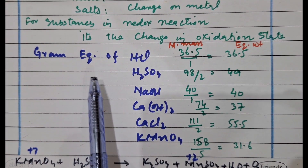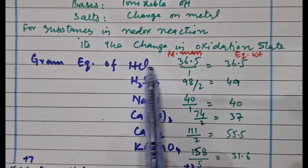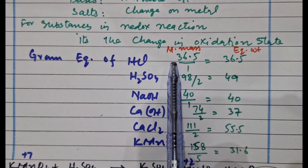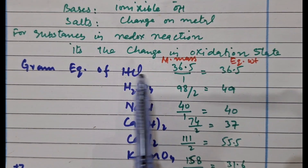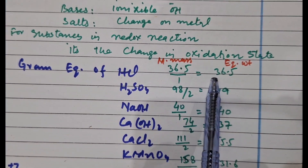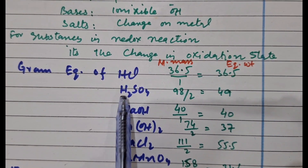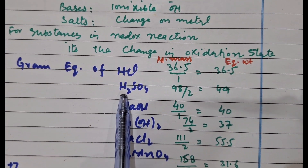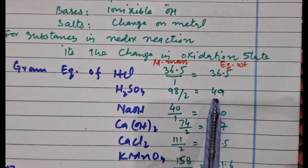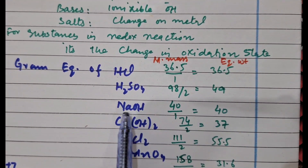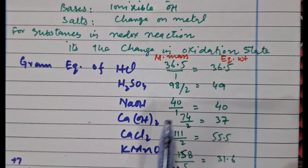Let me give you a few examples. For HCl, the molar mass is 36.5 and there is one replaceable hydrogen, so 36.5 divided by 1 gives its equivalent weight. For H₂SO₄, there are two replaceable hydrogens, so we divide its molar mass by 2 to get its gram equivalent. For sodium hydroxide, 40 divided by 1 gives 40 gram equivalents.